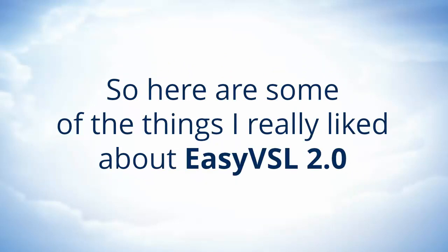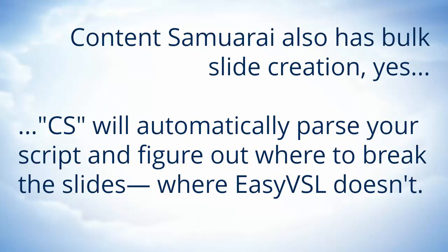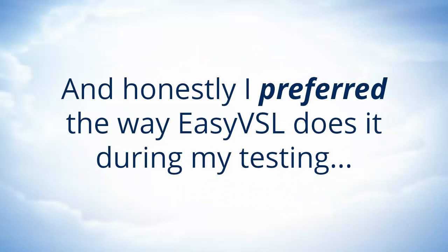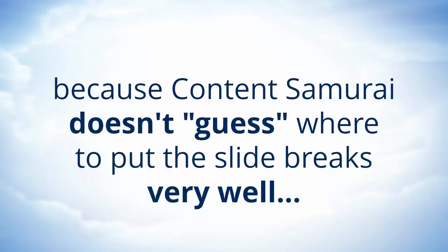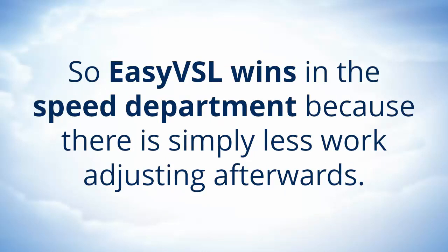Here are some of the things that I really liked about EZVSL 2.0. First of all, the automatic mass slide creation from a script is really good. Now Content Samurai also has this feature, though they will automatically parse your script and figure out on their own where to break the slides, which is something that EZVSL doesn't do — EZVSL makes you insert your own slide break marks in the script. But it's really easy because they include a Control-Enter keyboard shortcut. And honestly, I really preferred the way EZVSL does it, because Content Samurai doesn't guess where to put the slide breaks very well. When I was working with Content Samurai, I ended up doing a lot of cleanup — manually combining slides or moving words to another slide. So EZVSL definitely wins my vote on the speed of slide creation because there is simply less work adjusting the slides afterwards.